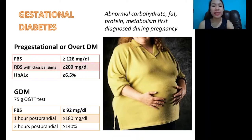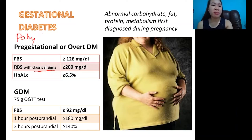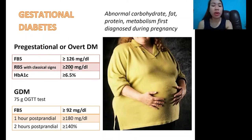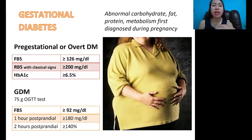We also have random blood sugar with the classic signs. The classic signs are: polyuria — excessive urination; polyphagia — excessive eating; and polydipsia — excessive thirst. With these classic signs and a random blood sugar greater than 200 mg per deciliter, we can also diagnose the mother as having pre-gestational diabetes. Random blood sugar means taking the blood sugar at any time of the day, whether the mother just ate, hasn't eaten yet, or is currently eating.